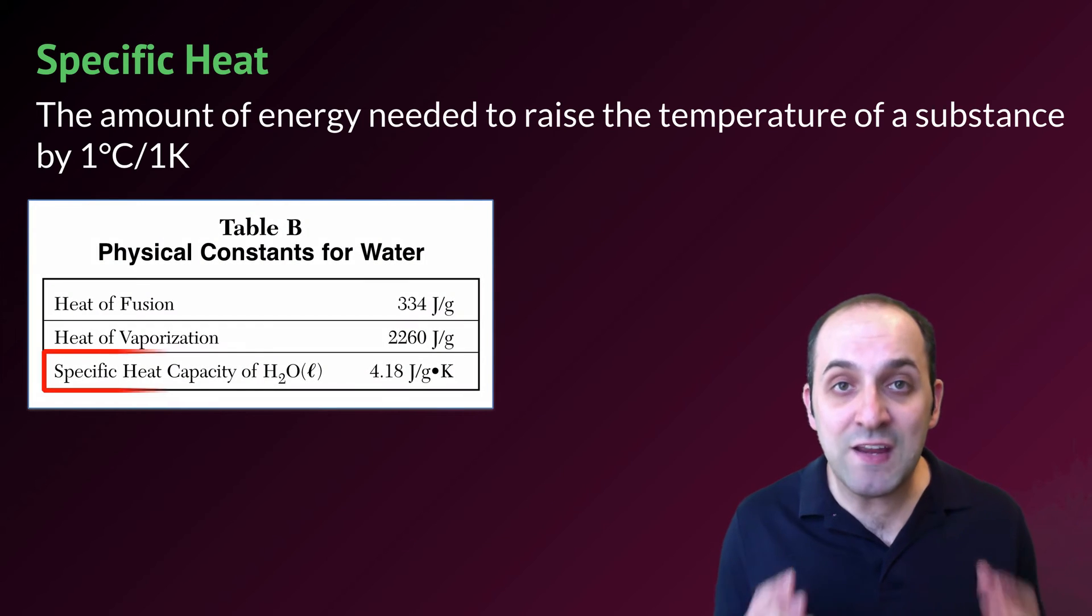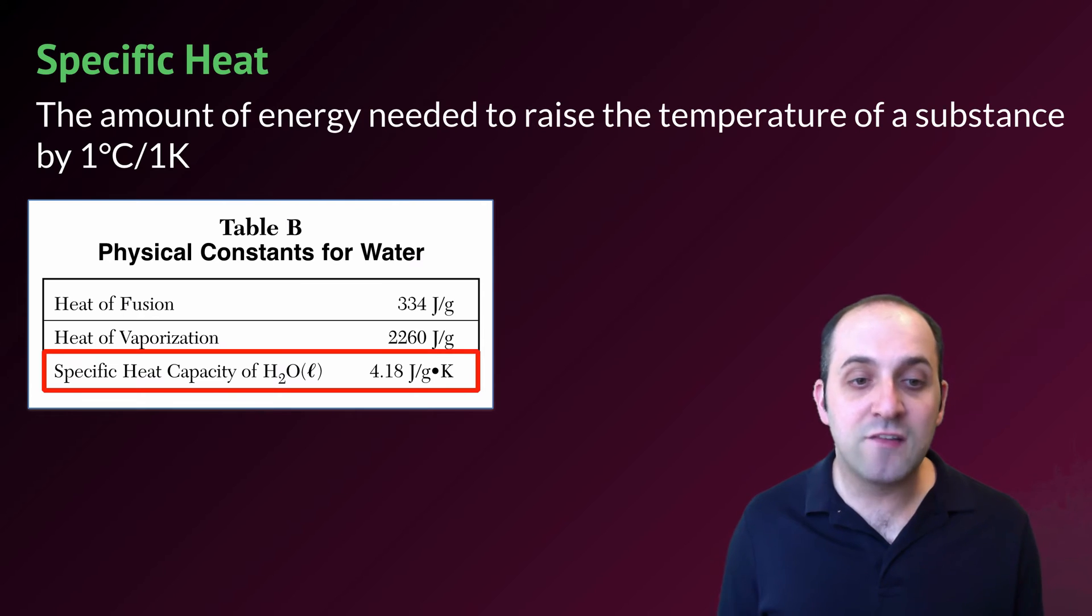The specific heat of water is given to us on reference table B. It's defined as 4.18 joules per gram per degree Kelvin. This means that 4.18 joules of energy can be absorbed by one gram of water in order to raise its temperature by one degree Kelvin or one degree Celsius.